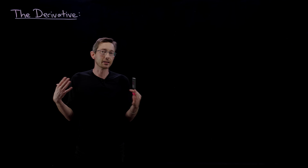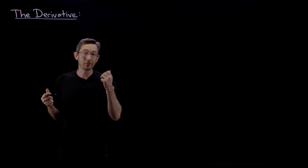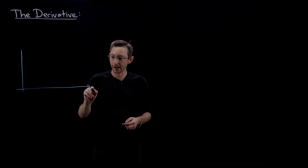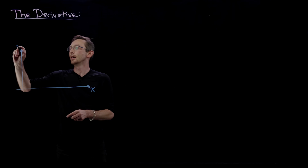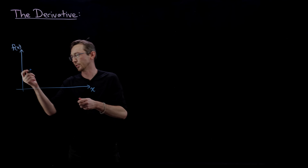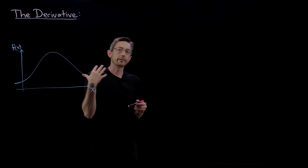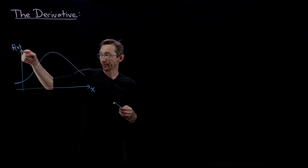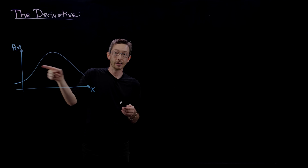Most of us have seen the derivative before — we've learned about this in calculus class — so I'm just going to give a quick refresher. We have some function f of some independent variable x on the x-axis, and then f of x on the y-axis, drawn as some curve. We define the derivative as the rate of change of this function f of x — how much this function changes in the y-direction as I vary x.